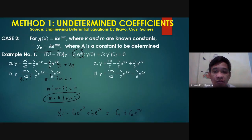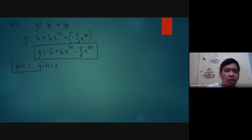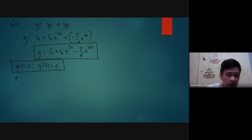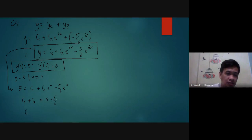We have initial conditions: y of 0 equals 5 and y prime of 0 equals 0. Applying y(0) equals 5 by substituting x equals 0: 5 equals c1 plus c2 times e to the 0 minus 5 over 6 times e to the 0. This gives c1 plus c2 equals 5 plus 5 over 6, which is 35 over 6.